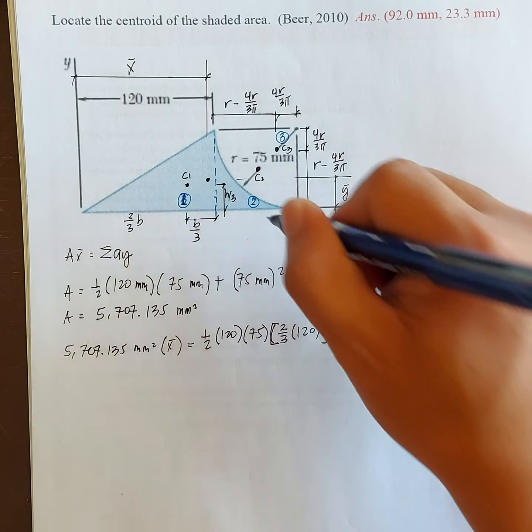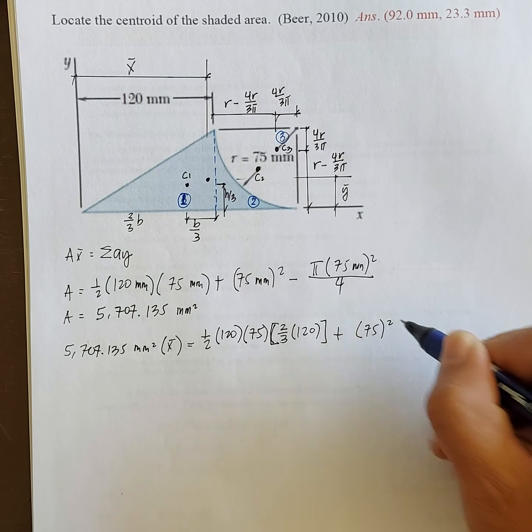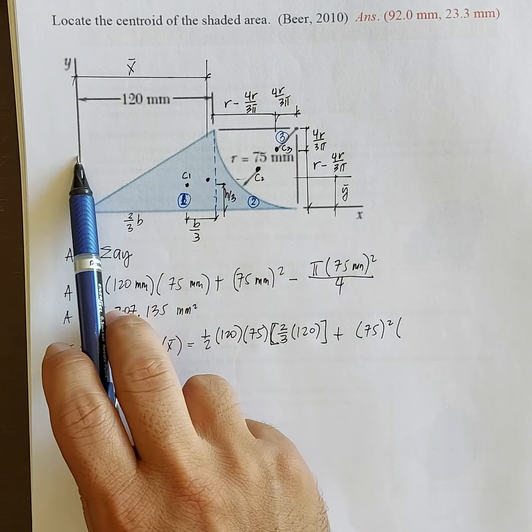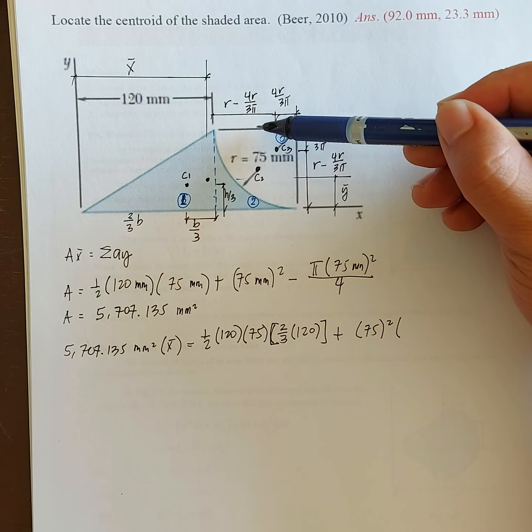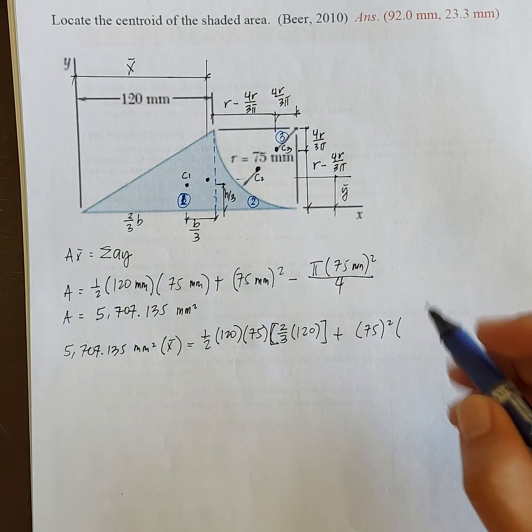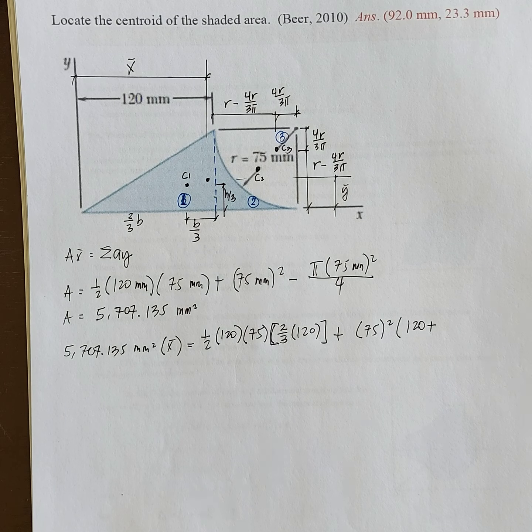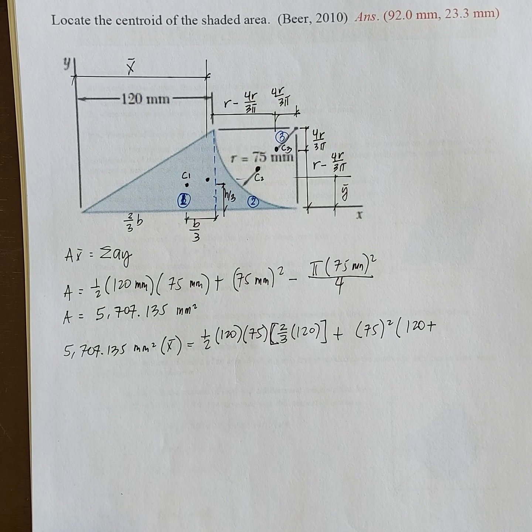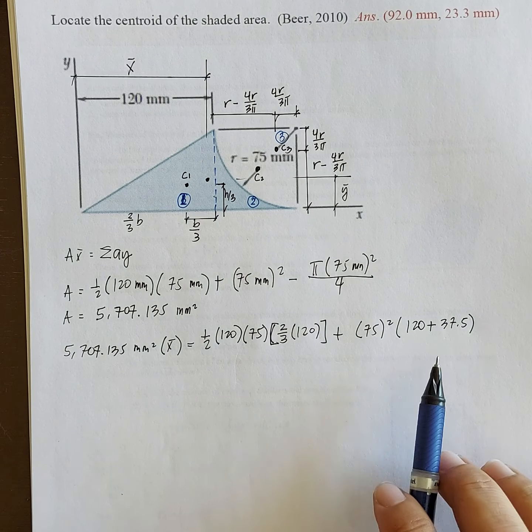Plus the square. Square, 75 squared, the area of our square, times the distance between C2 and Y axis. This distance. So this is 75, the radius, divided by 2, plus 120. So 120 mm plus 75 over 2. So how much is 75 over 2? That is 37.5.